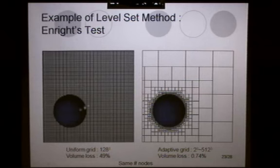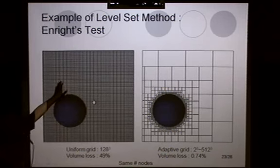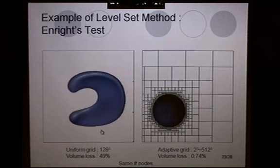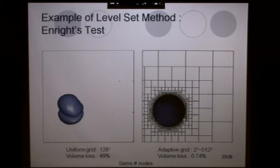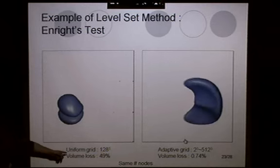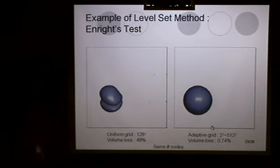We tried the Enright test problem. Enright test problem starts with a sphere. With this given velocity field, it forms into a very thin film. And then velocity field is reversed, so that the thin film is formed back to the original sphere. Theoretically, the sphere should be the same. But if it's a uniform grid, in the thin film state, the resolution is not fine enough, so that there is a difference. But in adaptive grid, though almost the same number of nodes was used, on the right case, we put more grid cells on the more important region. Much more successful.